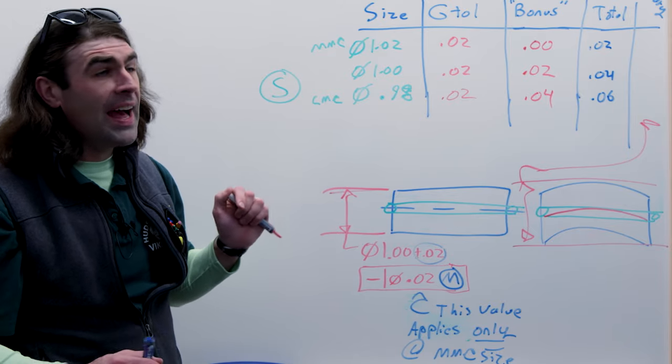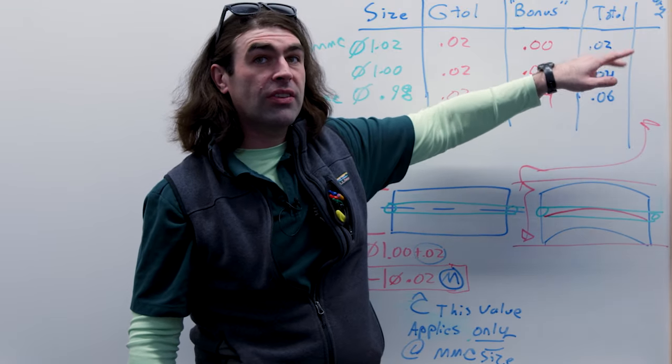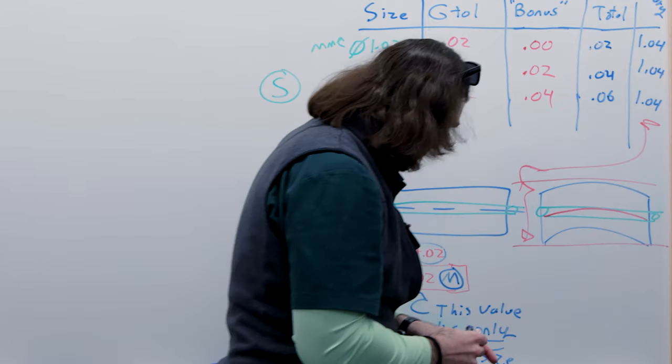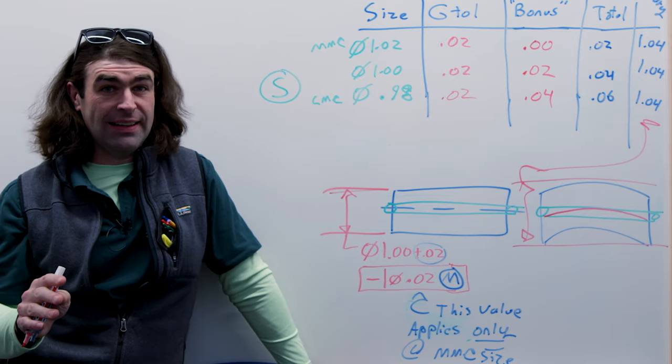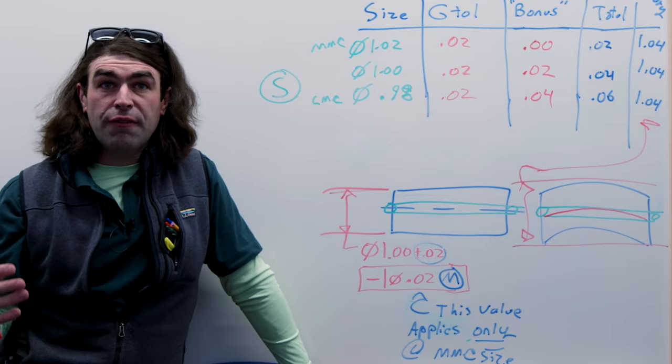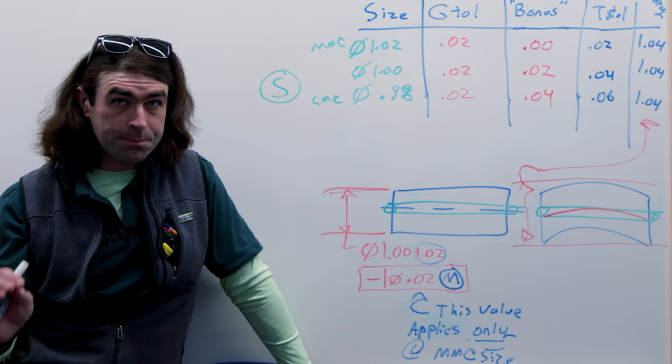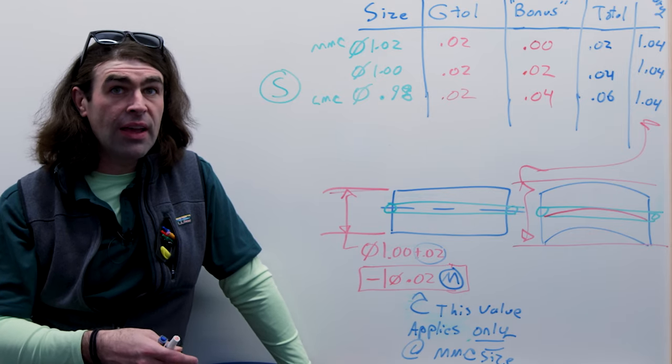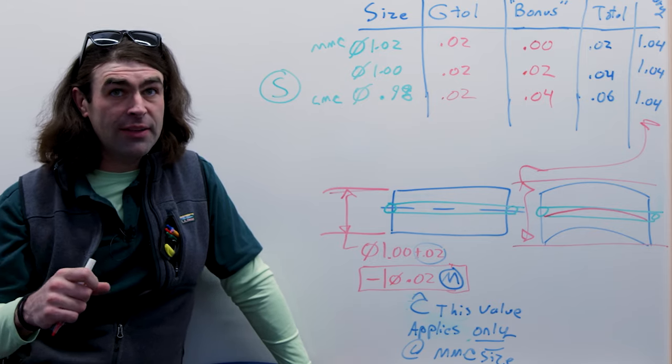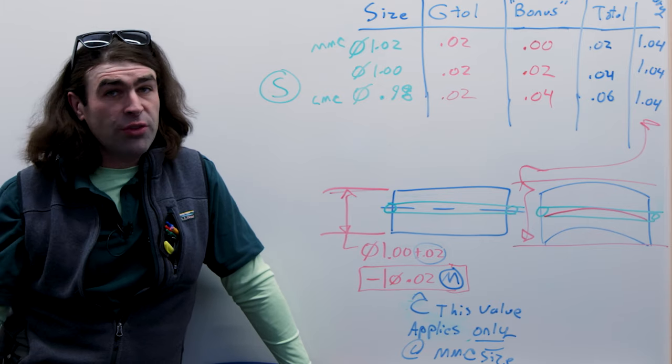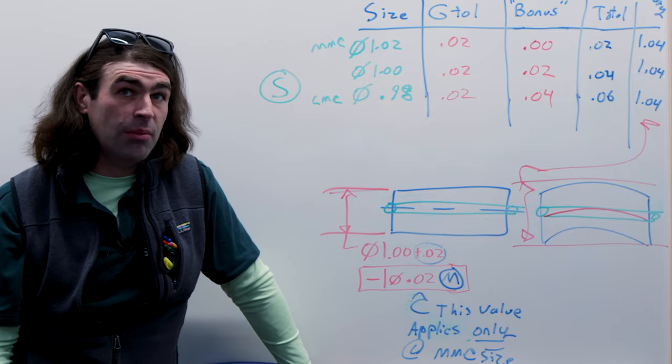One other effect this has is that if we add the actual size to the total geometric tolerance, we're going to get a single number, and that's going to be known as our virtual condition. You may have heard that term before - just a fixed boundary. And that's the size of the gauge we could use to verify this geometric tolerance. The other thing we need to verify is that the part isn't, the LMC is within limits, but essentially you can optimize this way. This isn't for everything - I'm just trying to show you how the MMC symbol works.